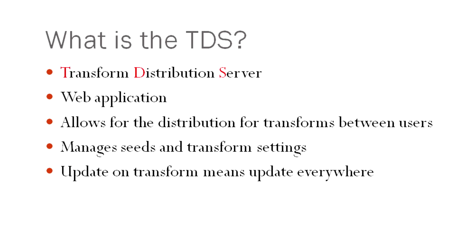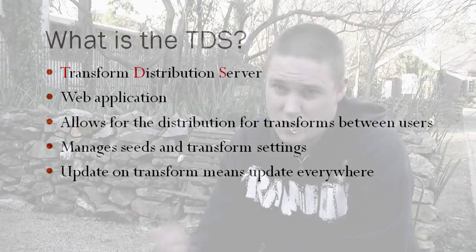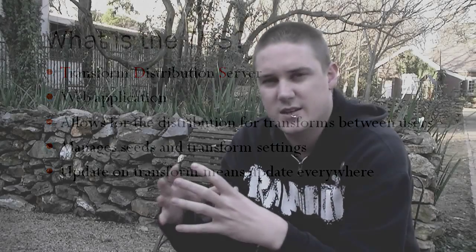What we've done is created what we call the Transform Distribution Server. You can think of it as a web application that you log into, where you can manage your transforms, set their settings, configure pop-ups, say where they run, and control who they're available to — meaning what seeds they're in. A seed is basically a collection of transforms; think of it as a container. So if you had ten transforms and wanted five shared with one group and five with another, you'd put them in two seeds and share them with your team like that.